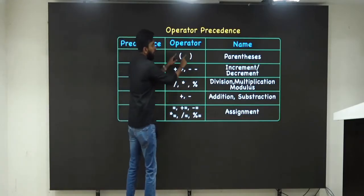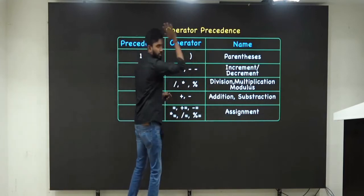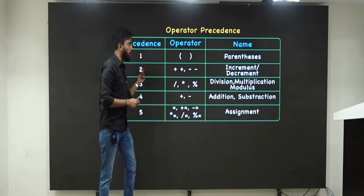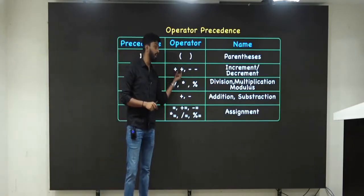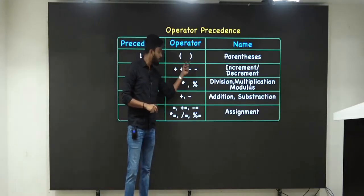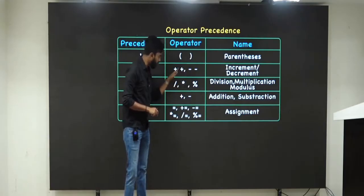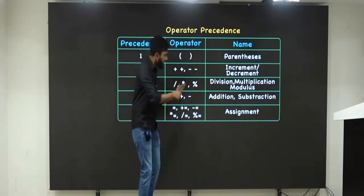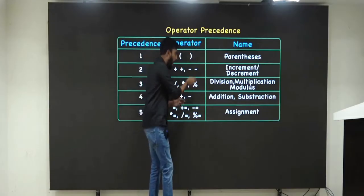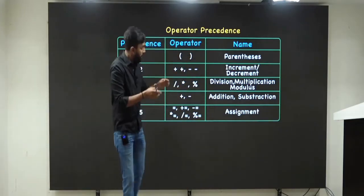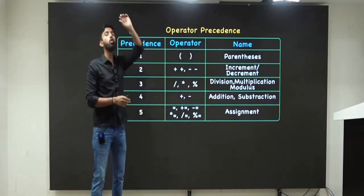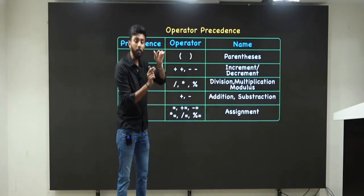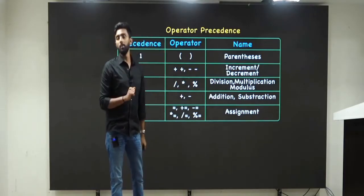First priority is always for parenthesis. Second priority is always for incrementation and decrementation. Third priority is for division, multiplication — and also modulus. Slash will give you the quotient, while modulo — the percentage symbol — will give you the remainder.